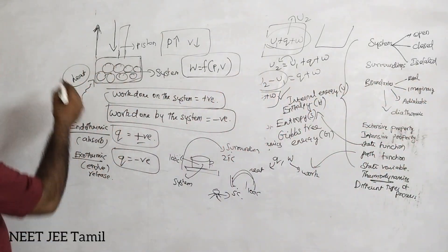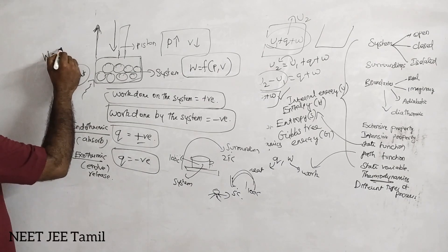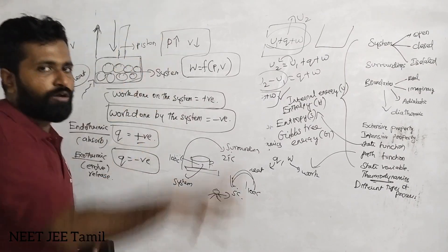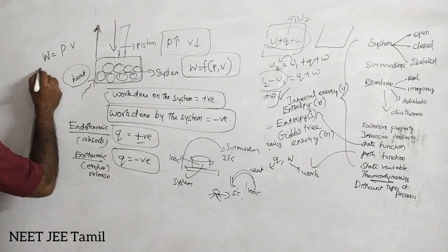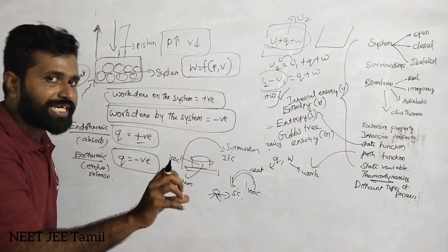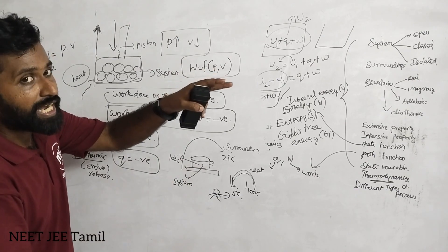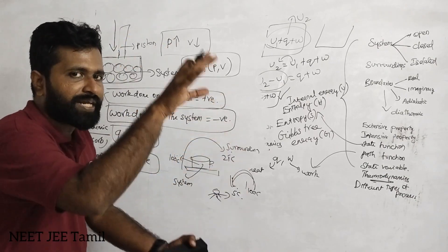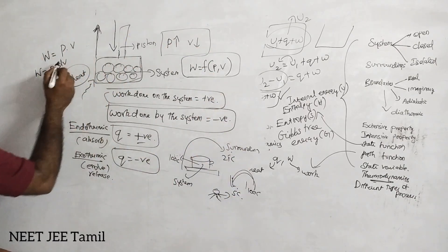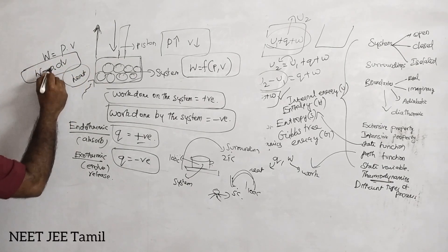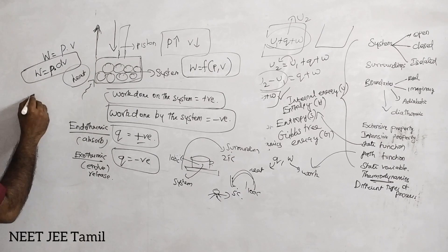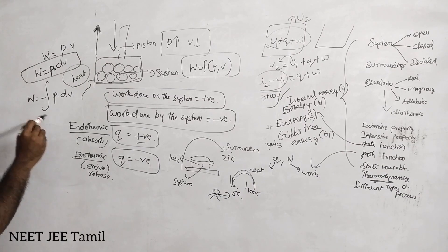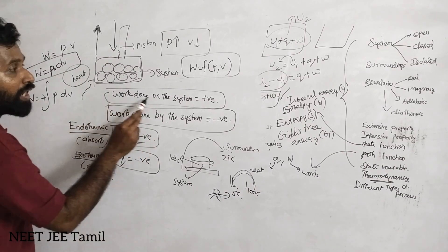Work is expressed as W = P × dV — pressure into change in volume. Work equals the integral of P dV. Work done by the system is negative; work done on the system is positive.